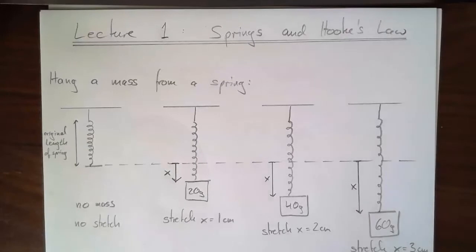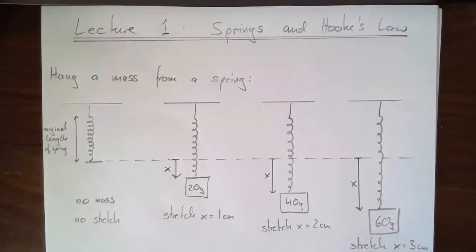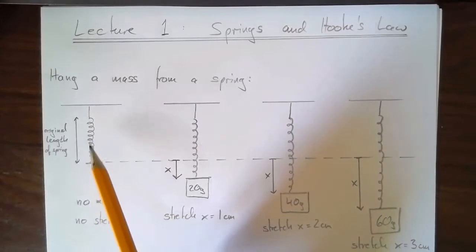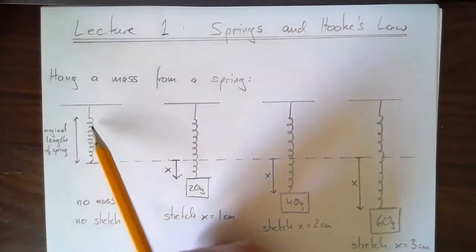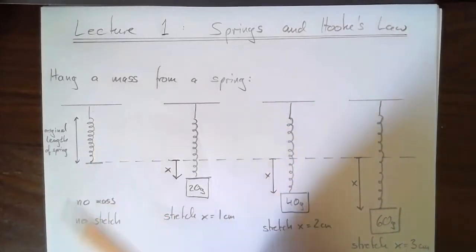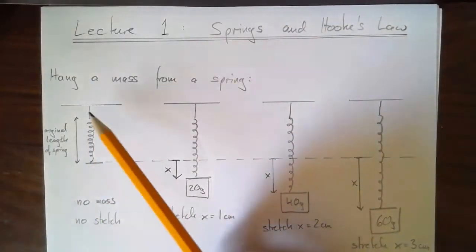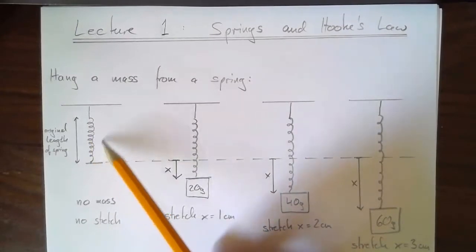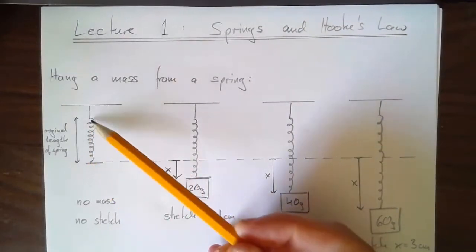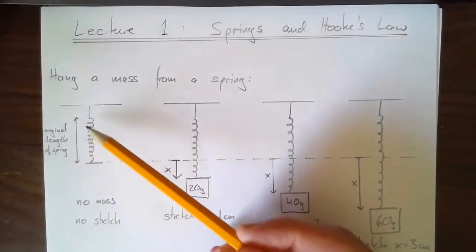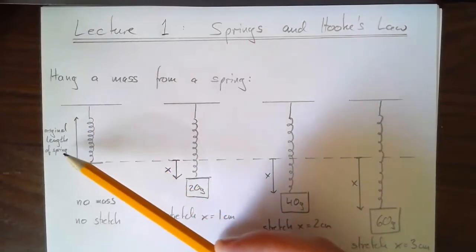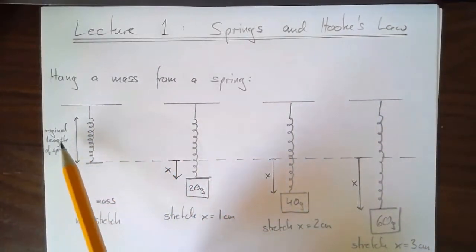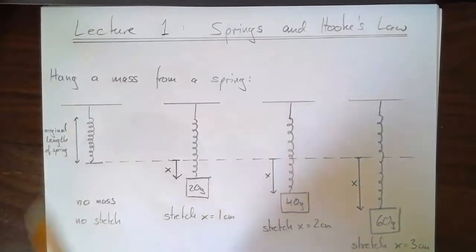Imagine a spring that can be stretched or squished, hanging from a ceiling. When it's just hanging there by itself, as drawn here, it has a certain length — I'll call this the original length of the spring.